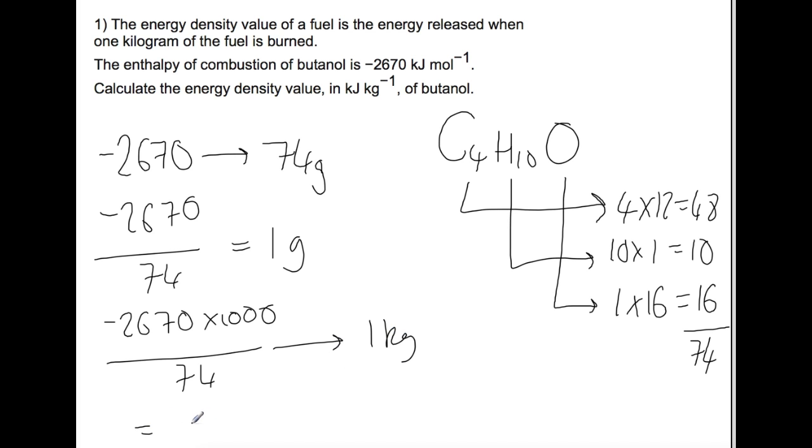And if you do that sum on the calculator, you find that the energy density of butanol is 36,081 kilojoules per kilogram.